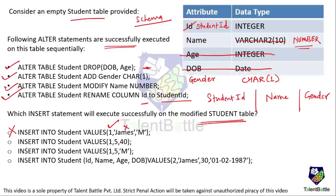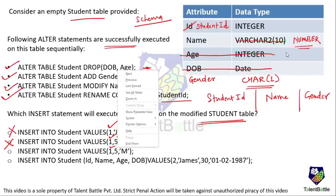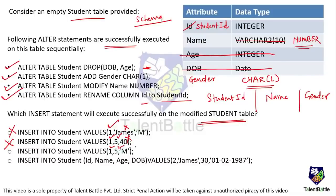Insert statement 2: INSERT INTO student VALUES (1, 5, 40). Student_id 1 is acceptable, 5 is acceptable for the NUMBER name column, but 40 for gender which requires CHAR(1) is not acceptable — so this also fails. Insert statement 3: INSERT INTO student VALUES (1, 5, 'M'). Student_id 1 is valid, 5 as NUMBER for name is valid, and 'M' as a single character for gender is valid. This insert executes successfully.